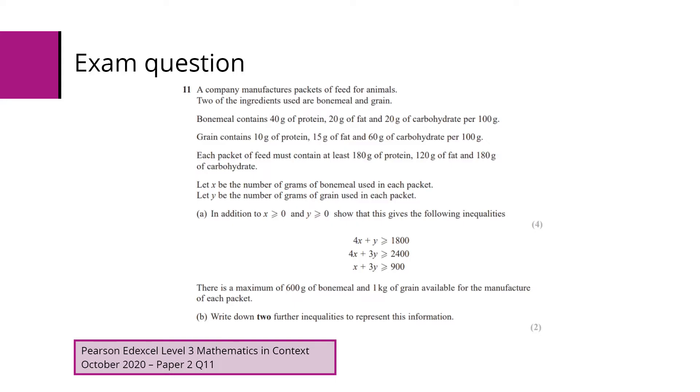We're told to use x for the number of grams of bone meal used in each packet and y for the number of grams of grain used in each packet. For part A we need to show that this information gives us these following inequalities. There's also a maximum of 600 grams of bone meal and one kilogram of grain available for the manufacturer of each packet. For part B we need to write down two further inequalities to represent the information.